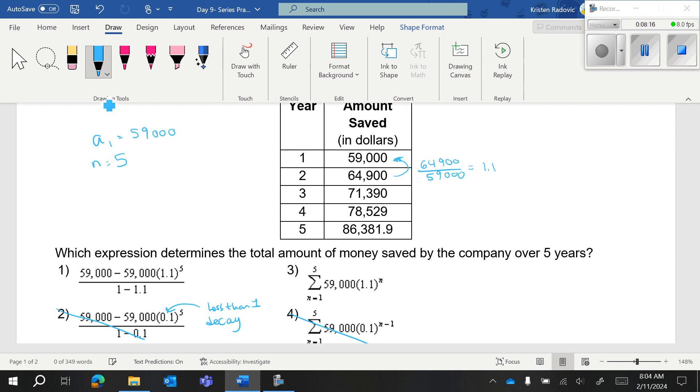If you have the formula S sub N equals A sub 1 minus A sub 1 R to the N over 1 minus R, we have S sub 5 equals the first term 59,000 minus 59,000 times R we said was 1.1 to the N is 5 over 1 minus 1.1. That actually looks like it's pretty right. Let's check the other one.